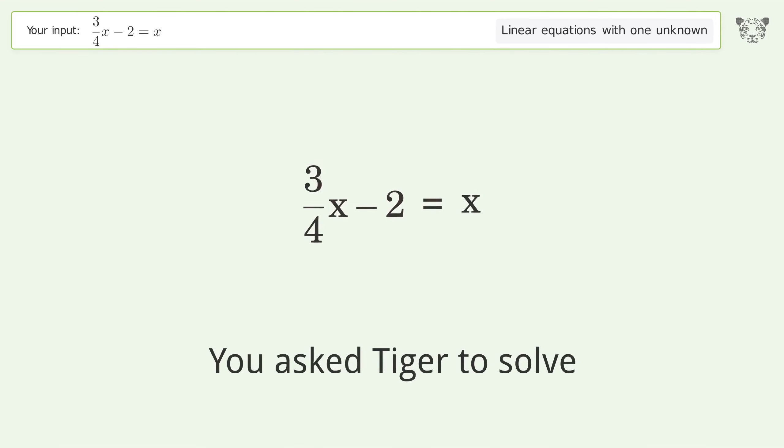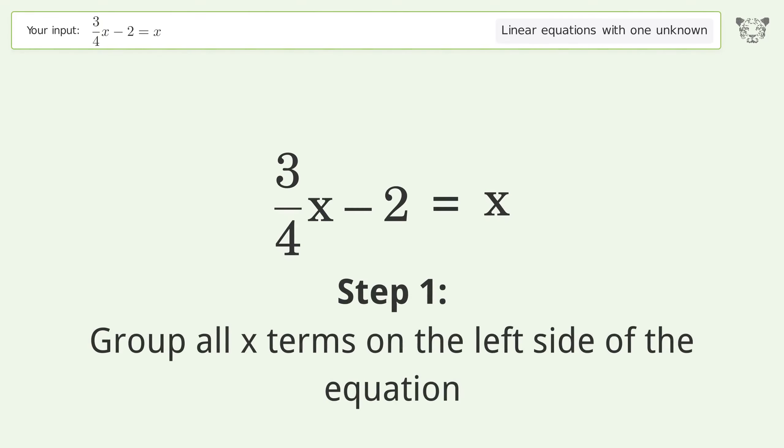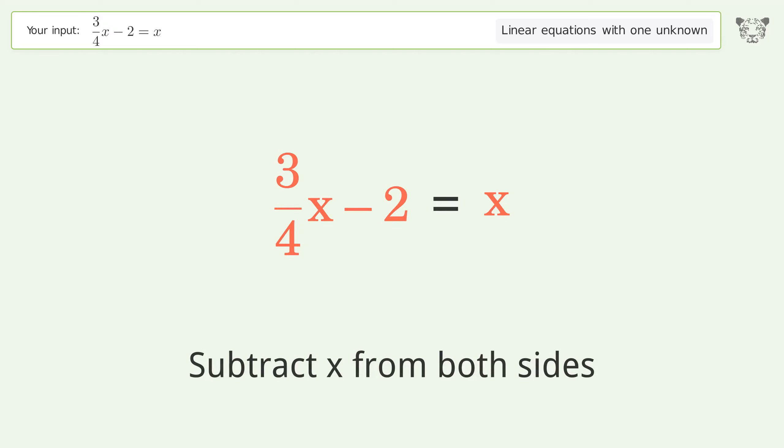You asked Tiger to solve this. It deals with linear equations with one unknown. The final result is x equals negative 8. Let's solve it step by step. Group all x terms on the left side of the equation. Subtract x from both sides.